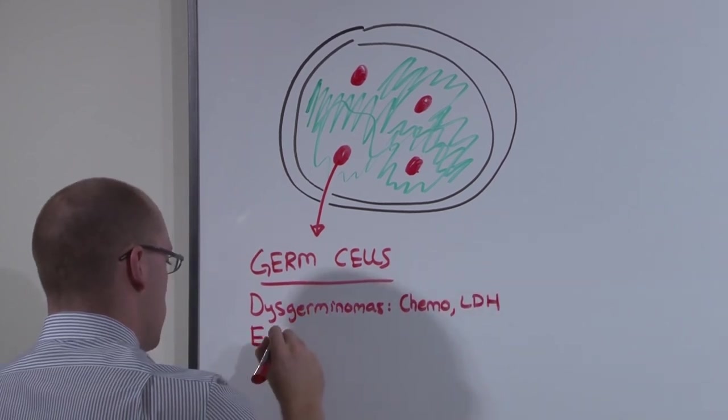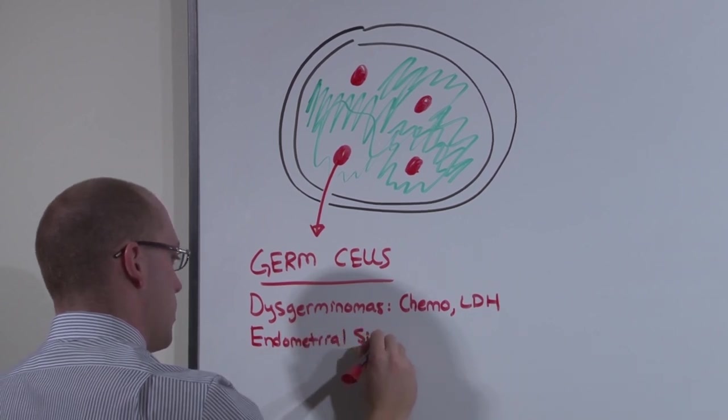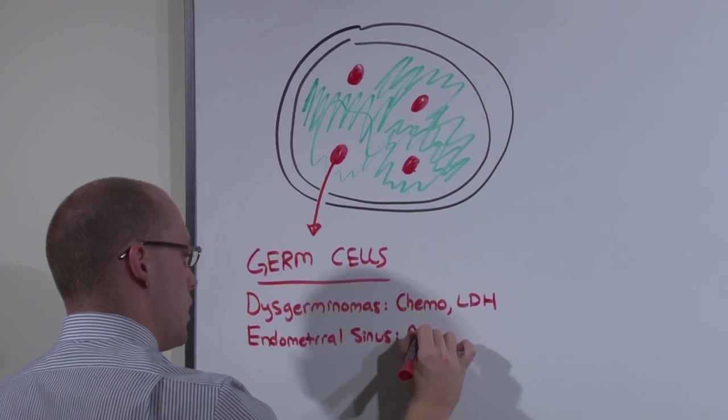The endometrial sinus tumors, the yolk sac, can be tracked with an alpha-fetoprotein.